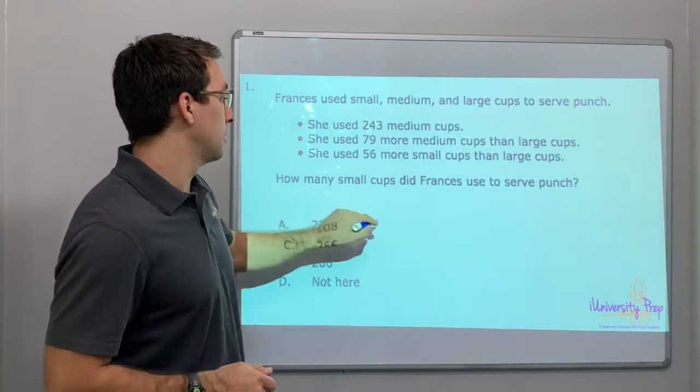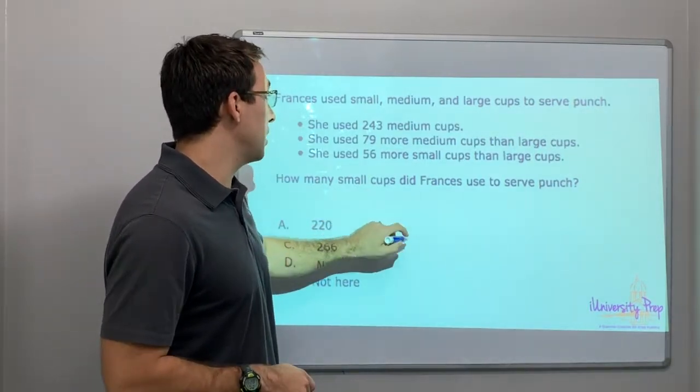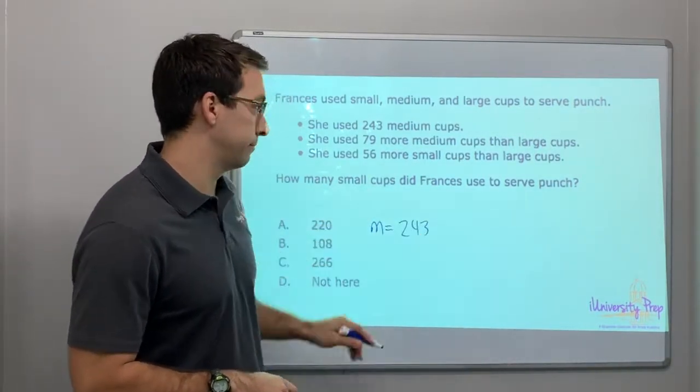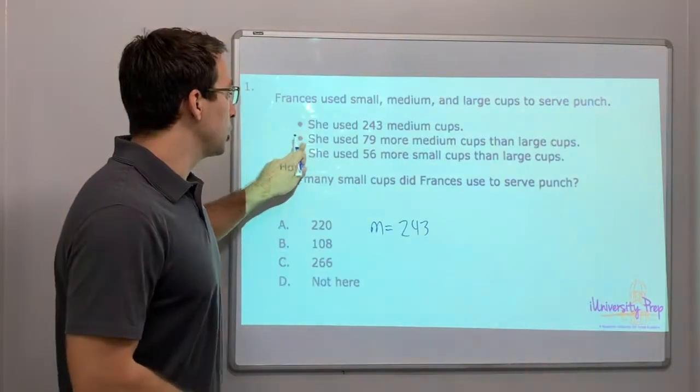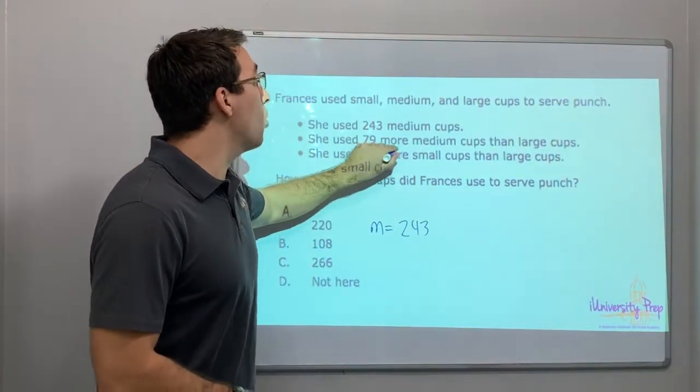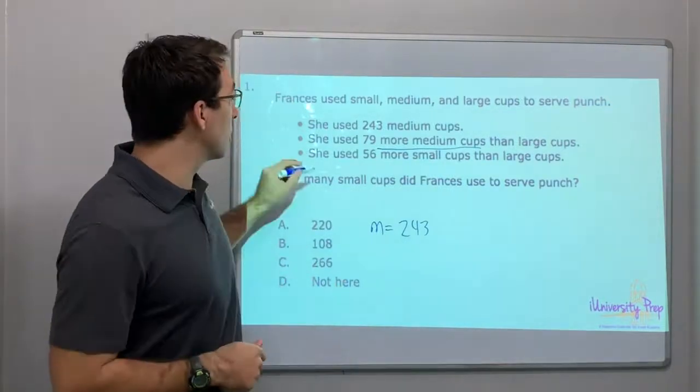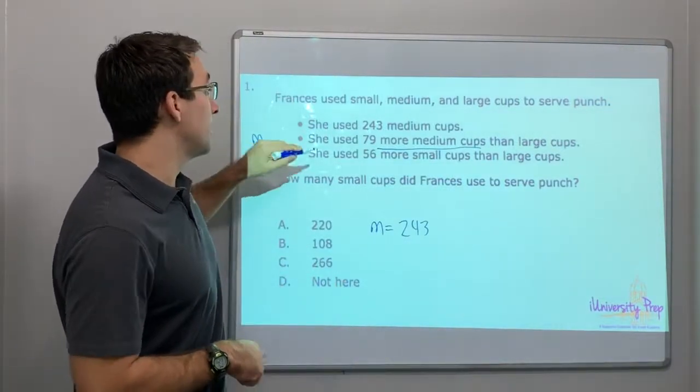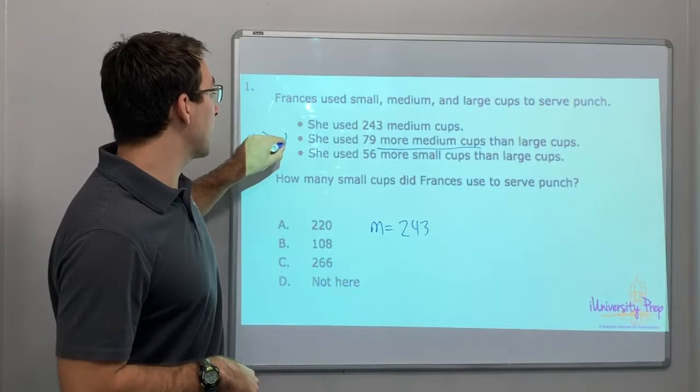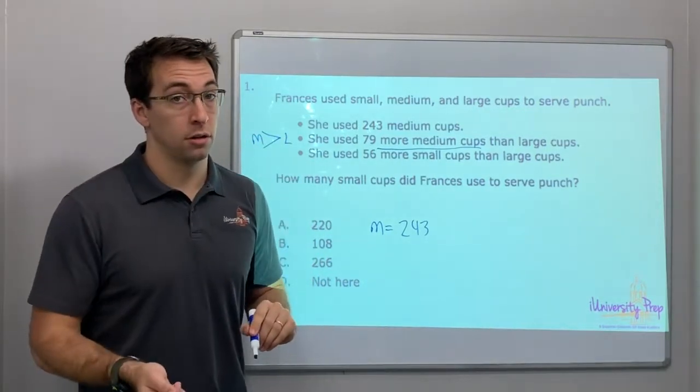Medium cups equals 243. She used 79 more medium cups than large cups. So that means medium is greater than large. Take notes on these types of questions.